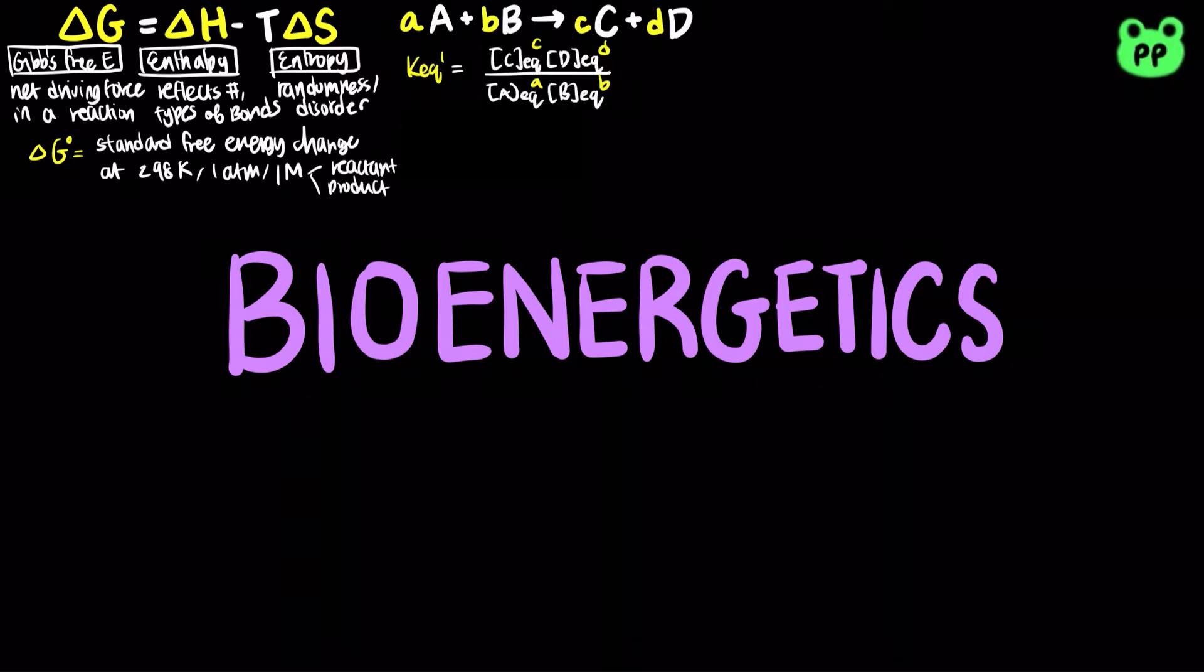The equilibrium constant Keq is defined by the concentrations of reactants and products at equilibrium. The standard free energy change is often used in chemistry and physics. However, biochemists define a different standard state similar to our body's physiological conditions, with pH of 7.0 and water concentration of 55.5 molar.